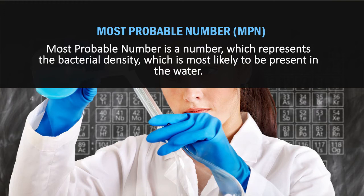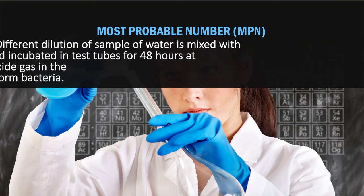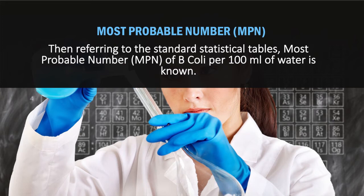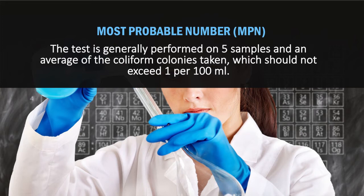Most probable number (MPN) is a number which represents the bacterial density most likely to be present in the water. Different dilutions of water samples are mixed with lactose broth and incubated in test tubes for 48 hours at 37 degrees centigrade. The presence of acid or carbon dioxide gas in the test tubes indicates the presence of coliform bacteria. Referring to the standard statistical table, the most probable number of B. coli per 100 ml of water is determined. The test is generally performed on 5 samples and an average of coliform colonies is taken, which should not exceed 1 per 100 ml.